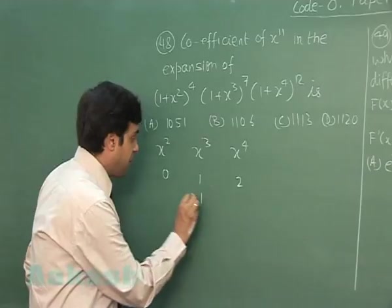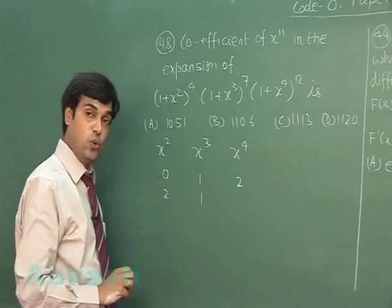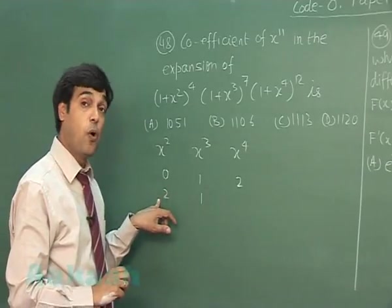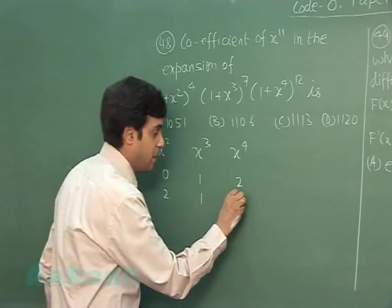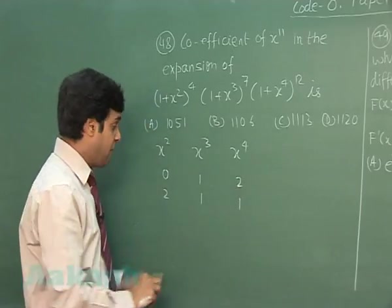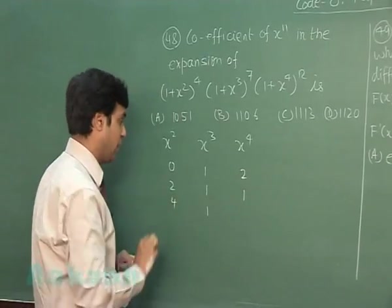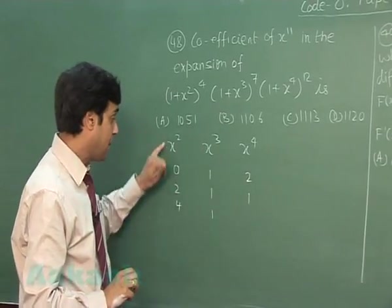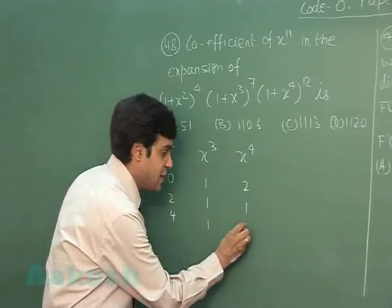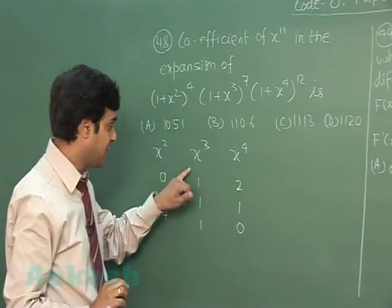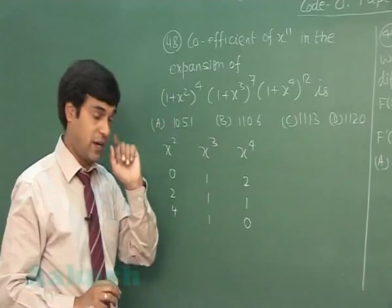Similarly, if instead of 0, we take it as 2, then we find 3 plus 4, 7, the power can be 1. If I take it 1 and this one as 4, it gives me 3 plus 8, 11 means it should be 0. So, these are the three possibilities with power of x³ as 1.